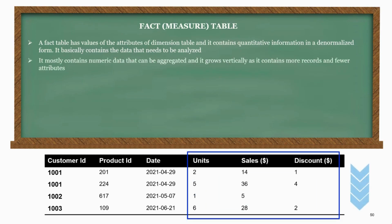It mostly contains numeric data that can be aggregated, and it grows vertically as it contains more records and fewer attributes.